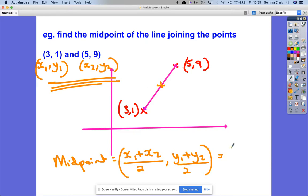So we've got 3 plus 5 divided by 2 for the first coordinate, and then 1 plus 9 divided by 2, the second coordinate. What's that, 8 divided by 2, 10 divided by 2, which is 4, 5.